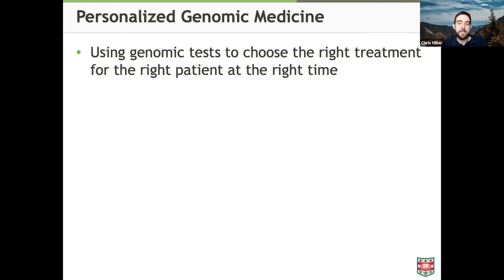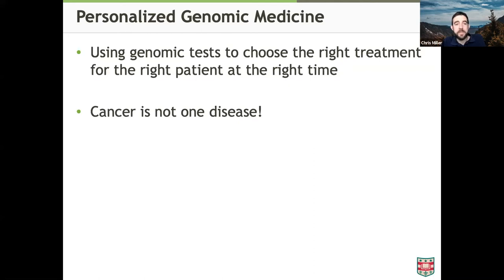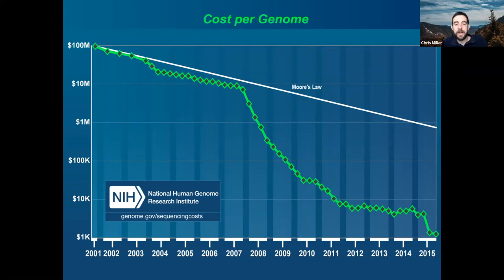Cancer isn't a single disease — it's many thousands of diseases. Breast cancer is not a breast cancer is not a breast cancer; they all have different combinations of underlying causative mutations. We're going to need dozens of different therapies for each cancer type, which is one reason some cancers are eminently curable right now while many are still quite deadly. What really spurred this ability to bring genomic medicine into reality is the cost of sequencing dropping — the fundamental technological change that enabled this.